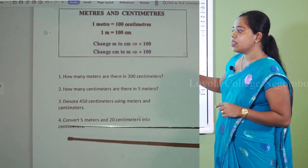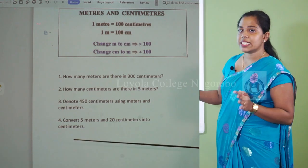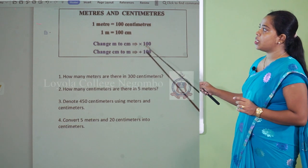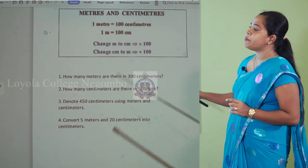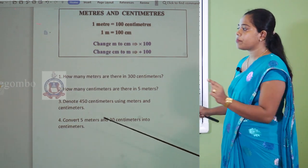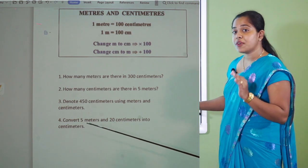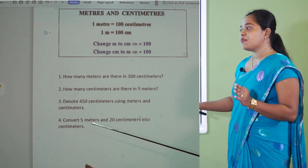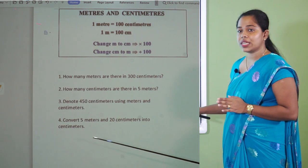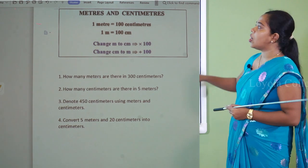Fourth one: Convert 5 meters and 20 centimeters into centimeters. To convert meters into centimeters, you need to multiply by 100. So 5 multiplied by 100 is 500. Then you must add the 20 centimeters: 500 plus 20 is 520 cm.